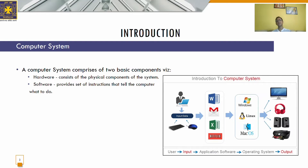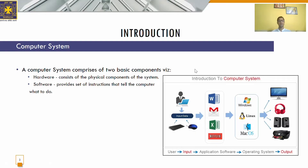The set of instructions which control the sequence of operations are known as programs, and collectively programs are called software. A computer system comprises two basic components: hardware and software. Hardware consists of the physical components of the system such as monitor, CPU, printer, keyboard, hard disk, RAM, etc. Software is the set of instructions which collectively is known as software.